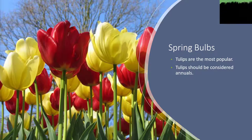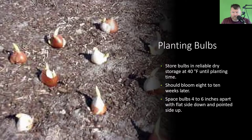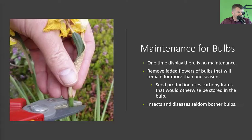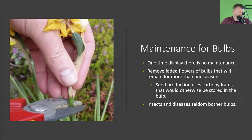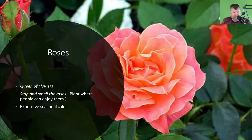With spring bulbs, tulips are the most popular and should be considered annuals — they're not going to come back and you'll have to replant them every year. Store bulbs in reliable dry storage at 40 degrees Fahrenheit until planting time; they should bloom eight to ten weeks later. Space bulbs four to six inches apart with the flat side down and the pointed side up. Maintenance for bulbs: they are a one-time display, so there is essentially no maintenance, and insects and diseases seldom bother them.